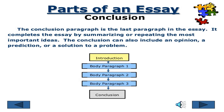The third part of the essay is the conclusion. The conclusion paragraph is the last paragraph in the essay. It completes the essay by summarizing or repeating the most important ideas. The conclusion can also include an opinion, a prediction, or a solution to a problem. An essay consists of three basic parts — here is a flow diagram: first introduction, then body paragraph one, body paragraph two, body paragraph three, and finally the conclusion.